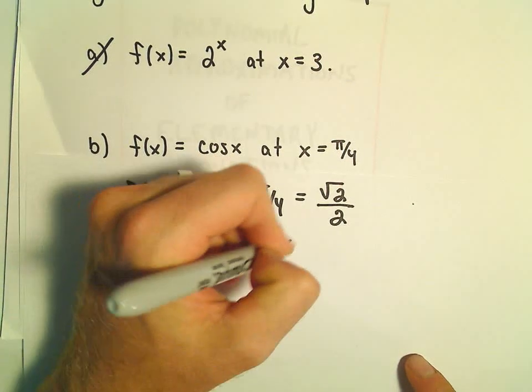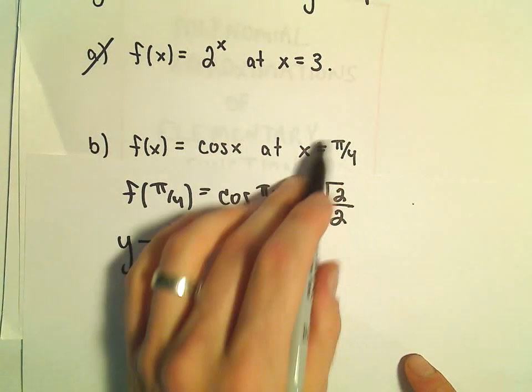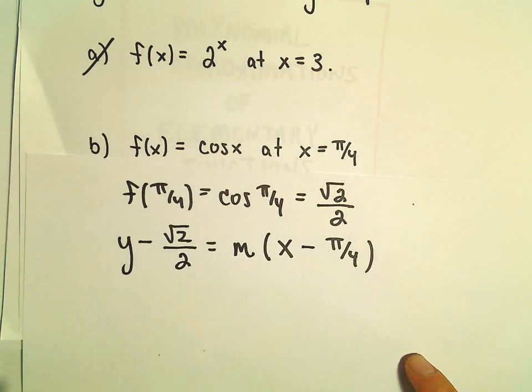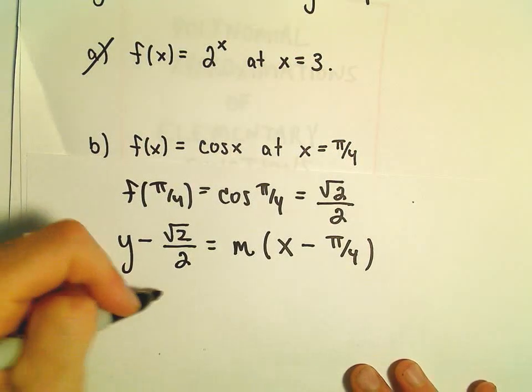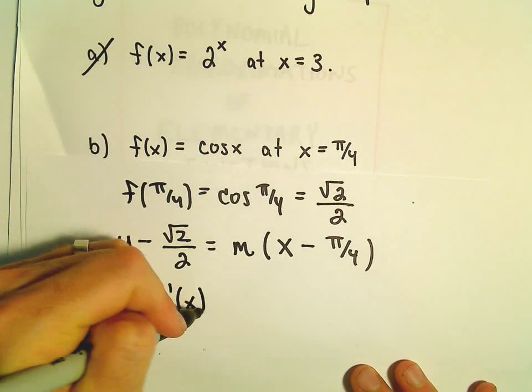For the slope of our line, we have x minus the x-coordinate. The x-coordinate is given as π/4. To get our slope, we'll take the derivative of our function.